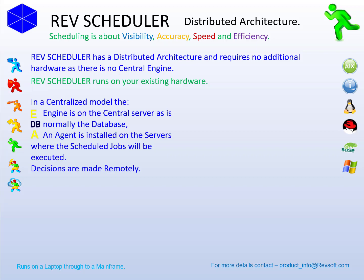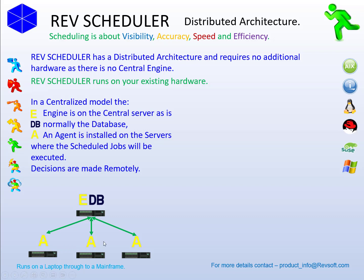Here's an example with three servers in a centralized model. The engine is on the central server, where all the decisions are made and usually where the database is installed as well. So any decisions about dependencies, triggers, and group jobs for any of these three node servers are made by the central server. You've got four servers, but only one decision maker.